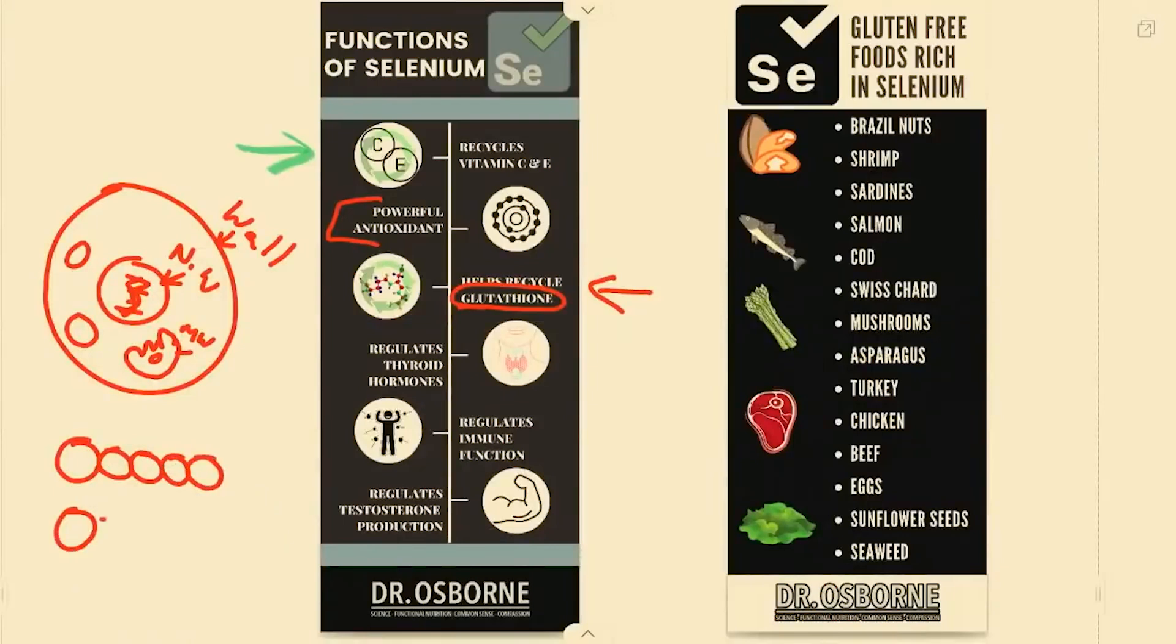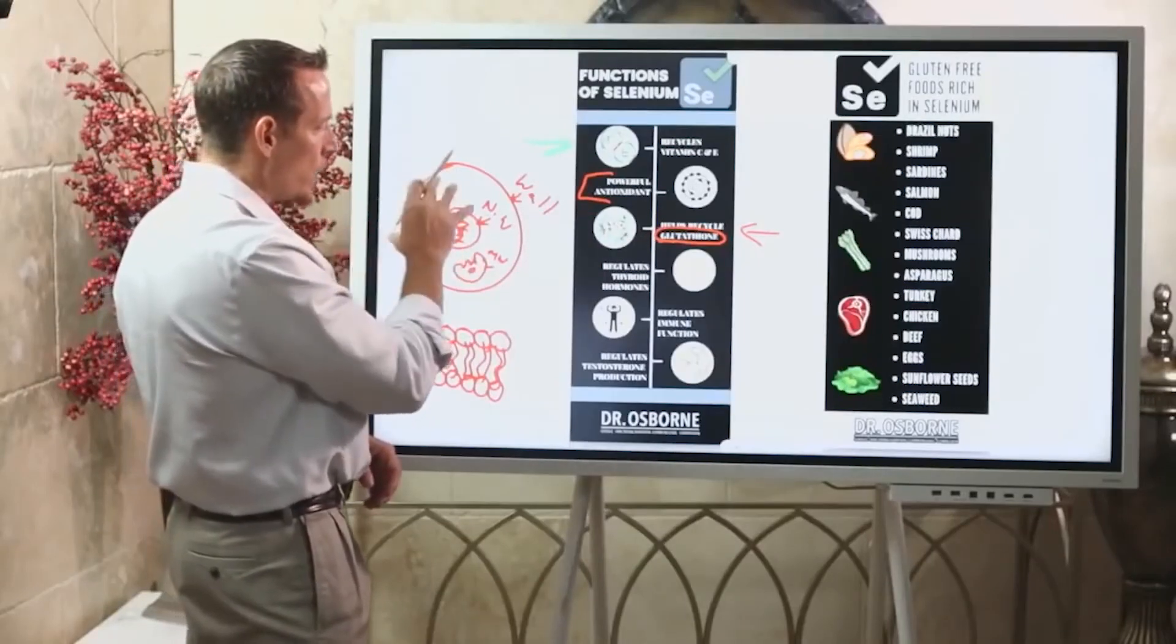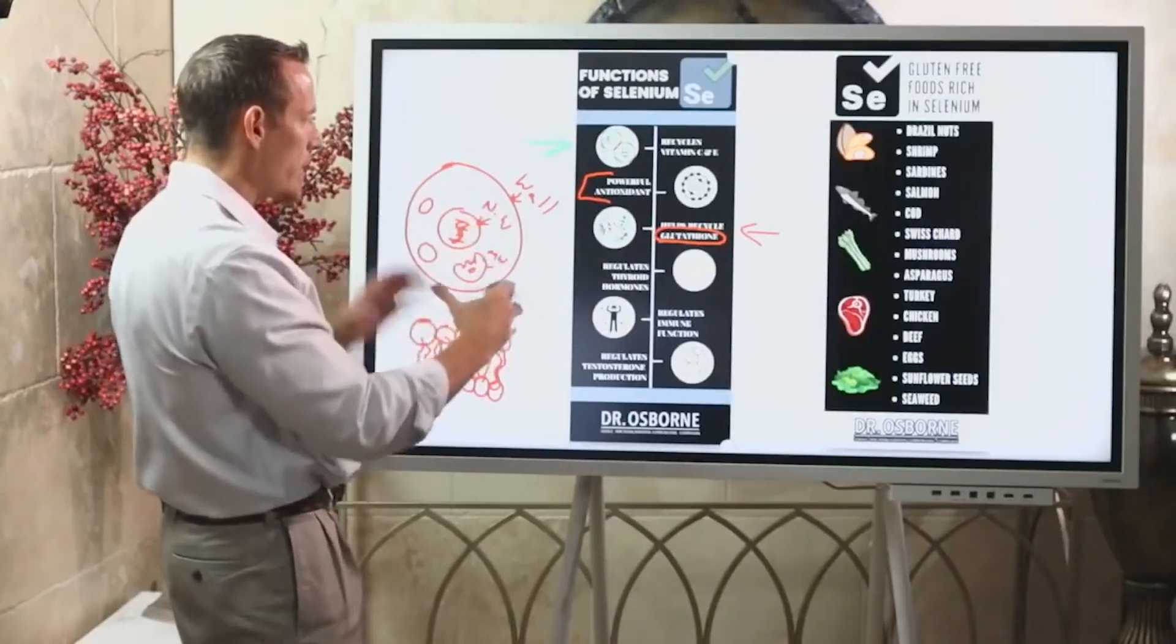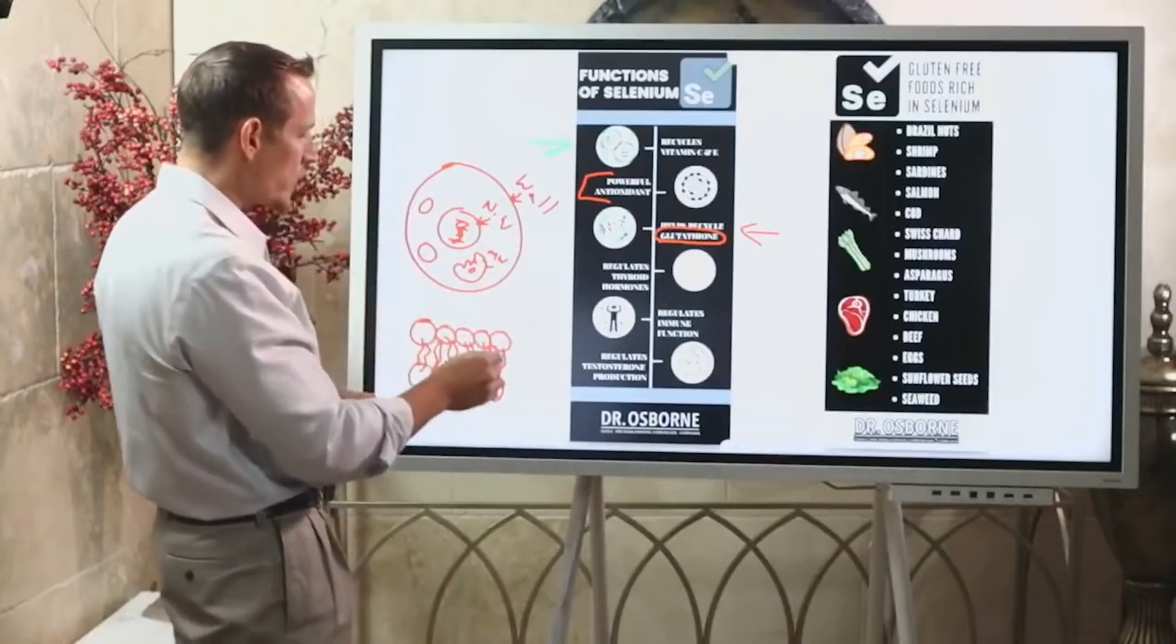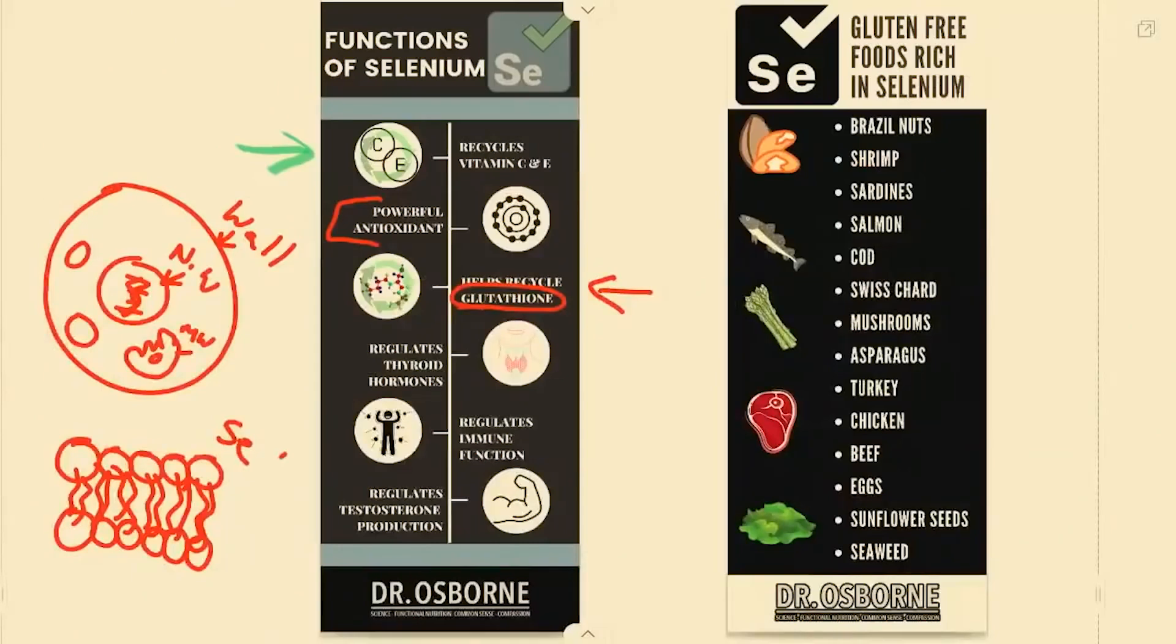It's what's known as a phospholipid bilayer. Now why is that important? It's important because walls are barriers. How can this cell stay viable without toxins leaking in and without nutrients and things leaking out? It's this cell wall - it keeps things where they're supposed to be. If we have selenium deficiency, this cell wall will rupture easier and that cell will break open.